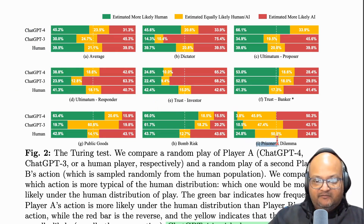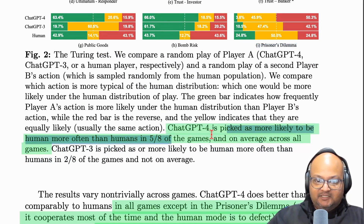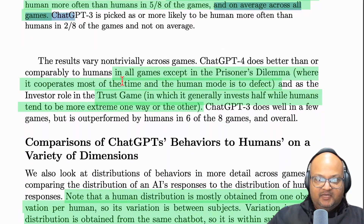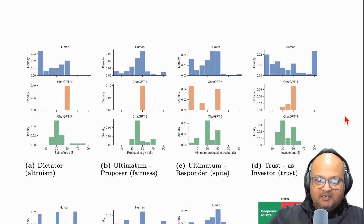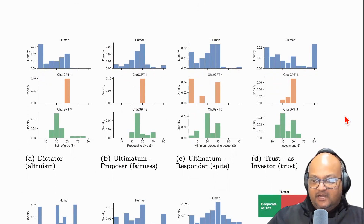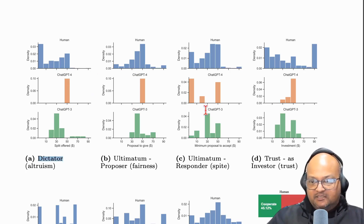There's a pretty big difference in the distribution for the Prisoner's Dilemma specifically. GPT-4 is picked as more likely to be human more often than humans in five out of eight games and on average across all of them. The big difference in the Prisoner's Dilemma is that it cooperates much more often, whereas humans will defect more often. As for differences overall, the big one is the range of answers — humans gave a wide range, whereas the LLMs gave answers much more concentrated in a narrow band of options.